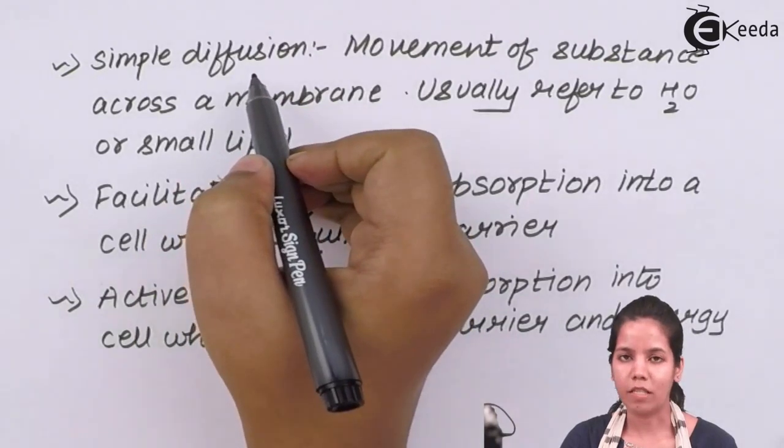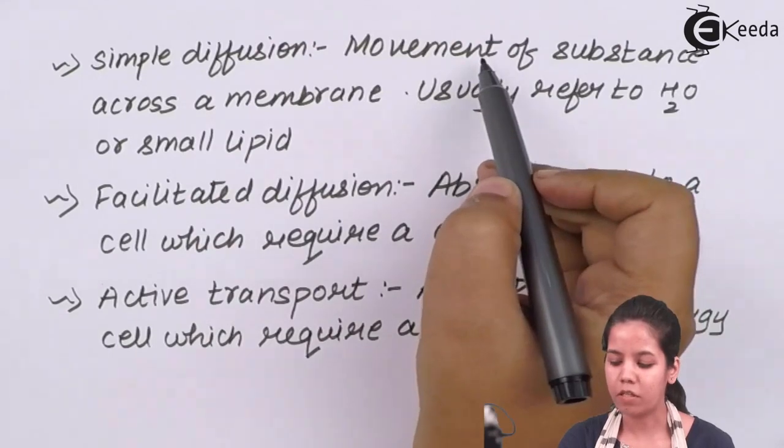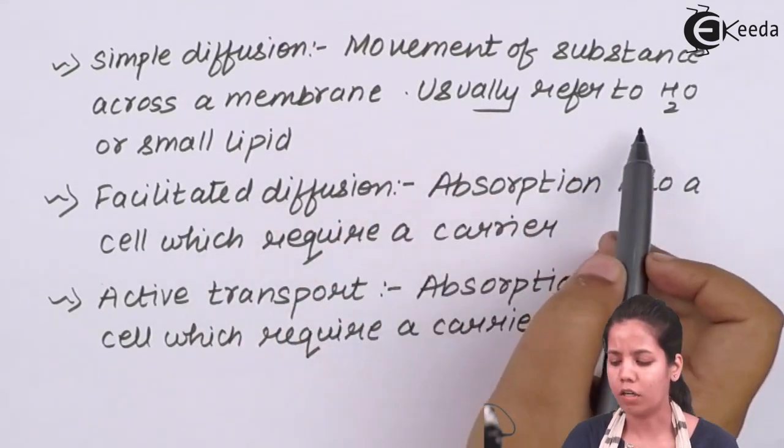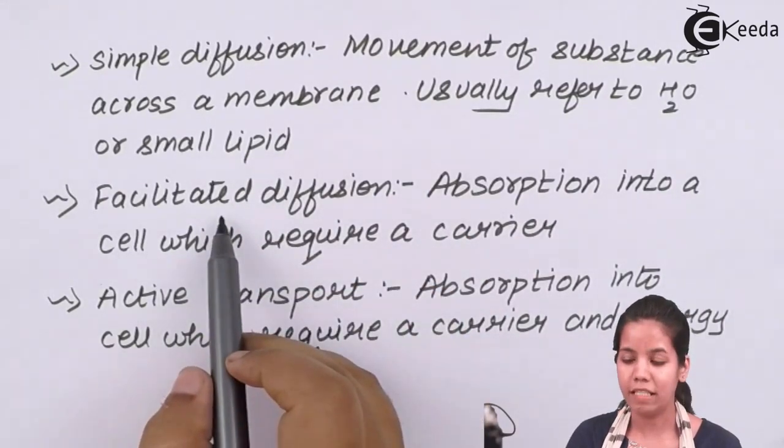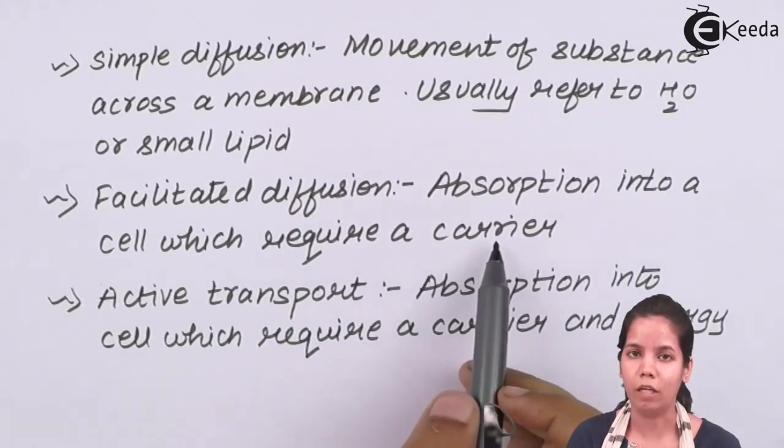The three processes involved are simple diffusion, which is movement of a substance across membrane and basically refers to water or small lipid molecules or fat molecules. Facilitated diffusion basically requires a carrier molecule or a helper molecule to carry the molecules.